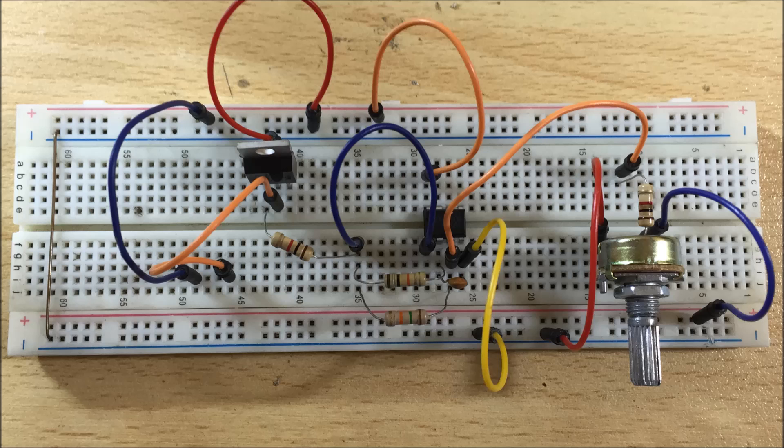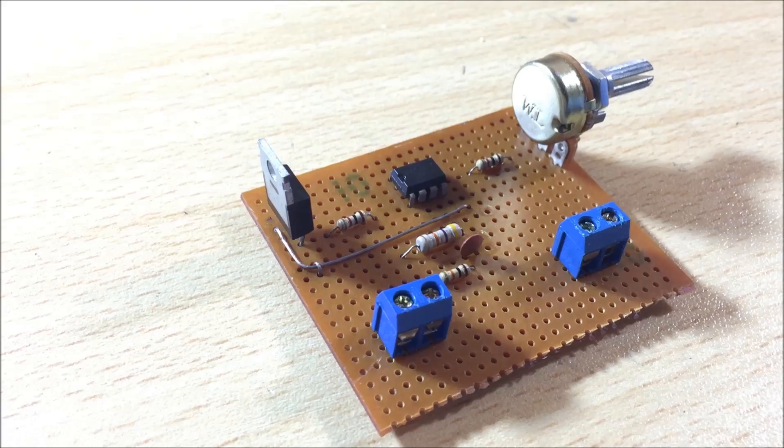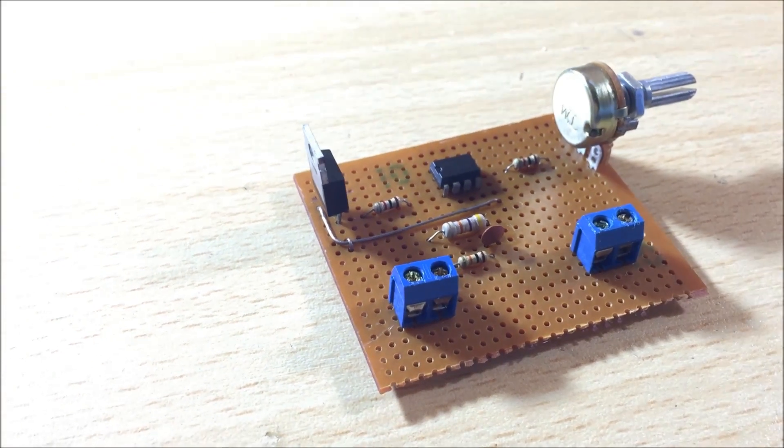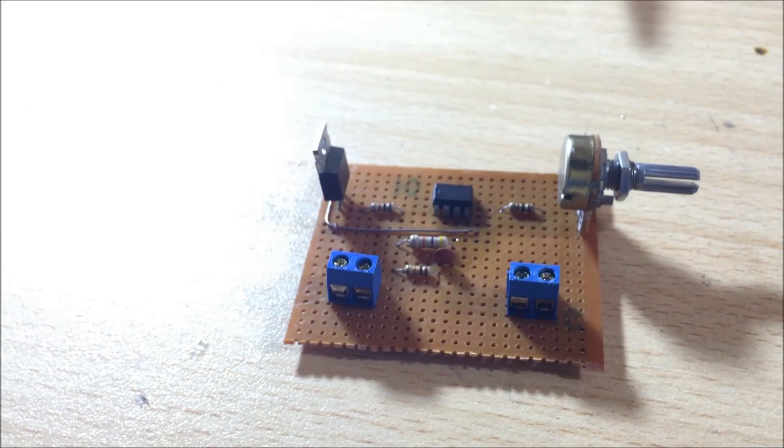So in this video I am going to show you how you can build a really powerful motor speed controller that can handle current up to 30 amps and voltage from 0 to 32 volts. So let's get started.